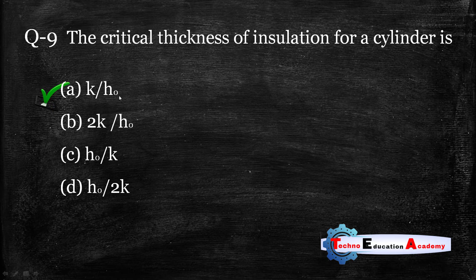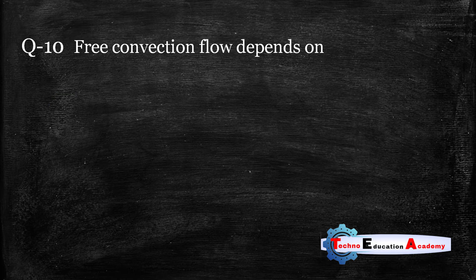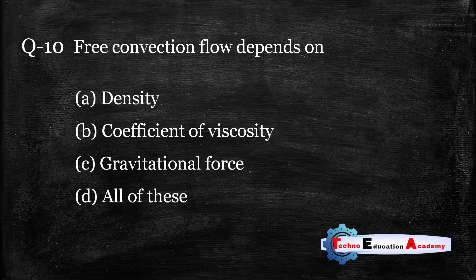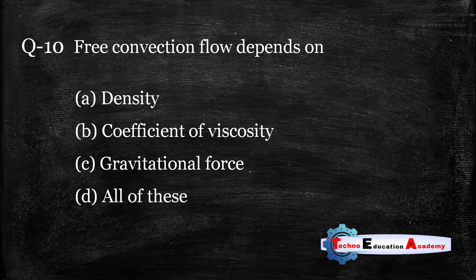Question number ten: Free convection flow depends on — density, coefficient of viscosity, gravitational force, or all of these. There are two types of convection: forced convection and free convection. Free convection is due to density difference — when temperature increases, fluid density decreases, lighter particles move upward and denser particles move downward. This depends on density, coefficient of viscosity, and gravitational force. So the correct answer is option D — all of these.